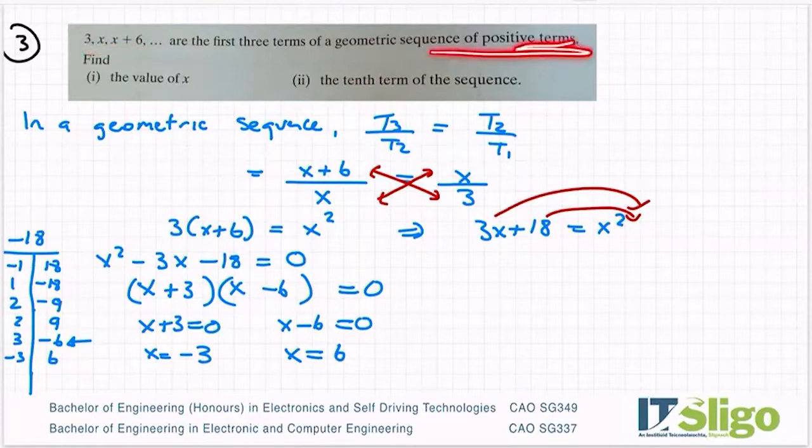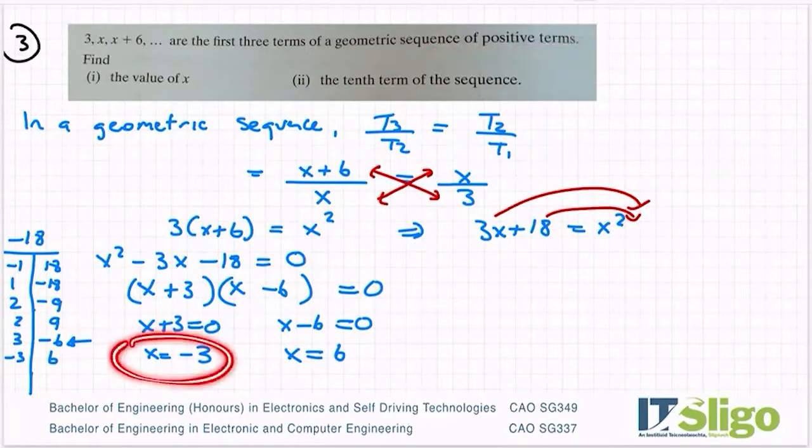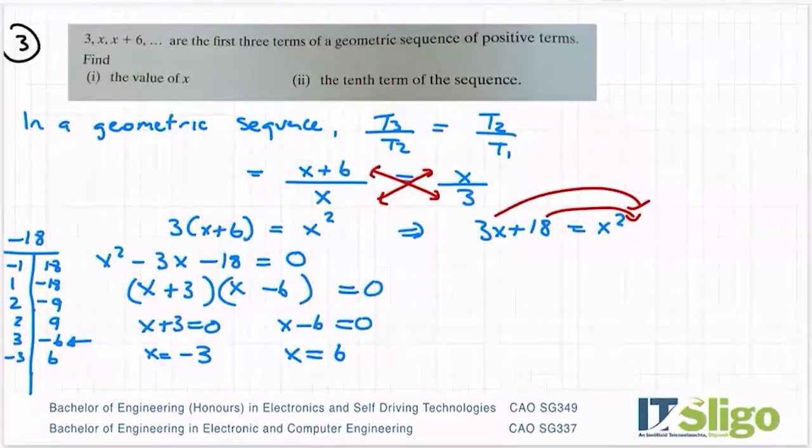It says it's a sequence of positive terms. So if x was minus 3, it would be zero in the middle, and then I would have minus 3 plus 6. So it's going to have to be this one here to ensure that I have positive terms.